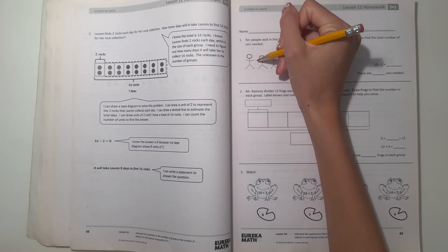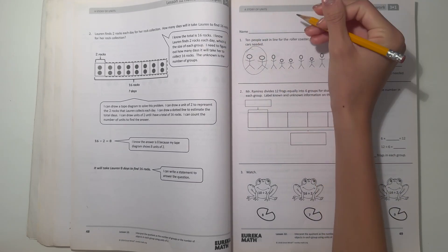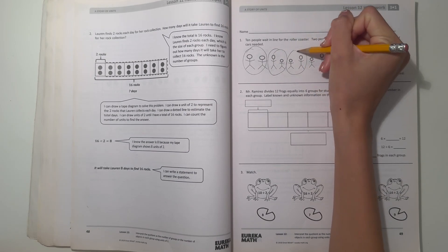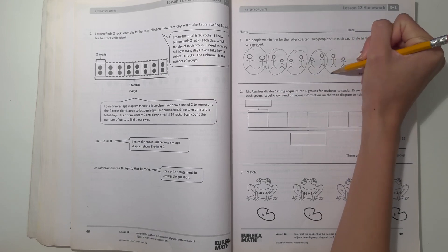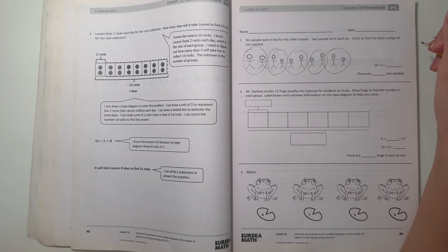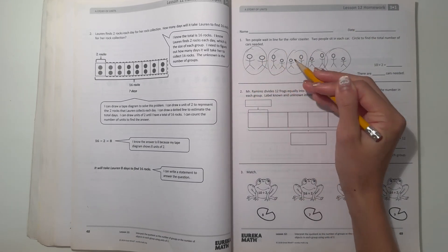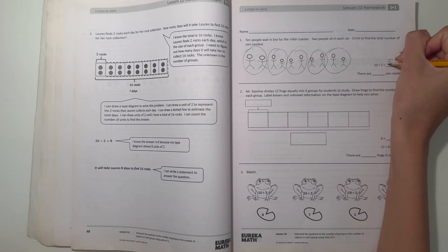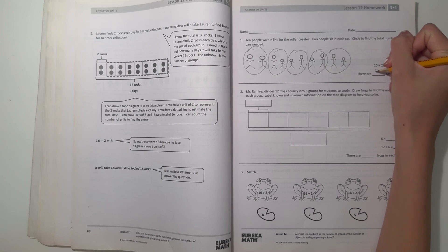So let's see. 1, 2, that's one group. 1, 2, 2, 2, and 2. So 10 divided by 2, we have 1, 2, 3, 4, 5. So we have 5 groups, which means there are 5 cars needed.